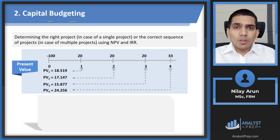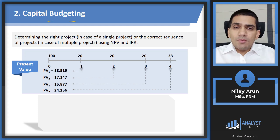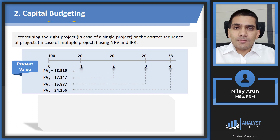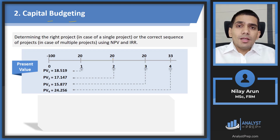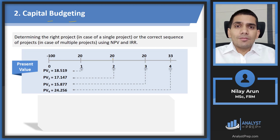If we have to select multiple projects, NPV will help us sequence them — we take the various NPVs and sort them in descending order, selecting the maximum NPV project first. The difference between present value and net present value is that when calculating NPV, we also subtract the initial cash outflow. Let's try out a question.